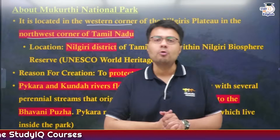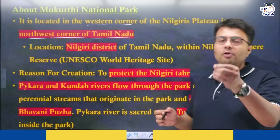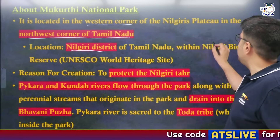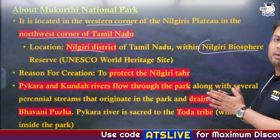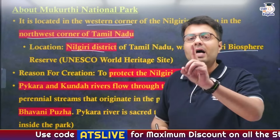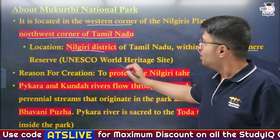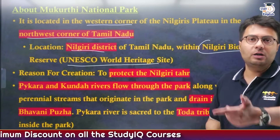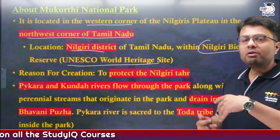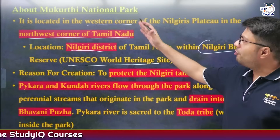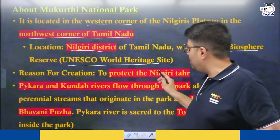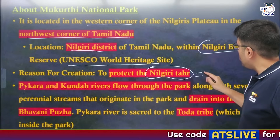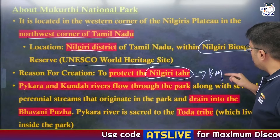Mukurti National Park is located in the Nilgiri district of Tamil Nadu and within the larger Nilgiri Biosphere Reserve. The Nilgiri Biosphere Reserve has the distinction of being one of UNESCO's World Heritage Sites, particularly an ecological World Heritage Site. The reason for the creation of Mukurti National Park was to protect the flagship species of the region — the Nilgiri Tahr, also known as a Keystone Species.